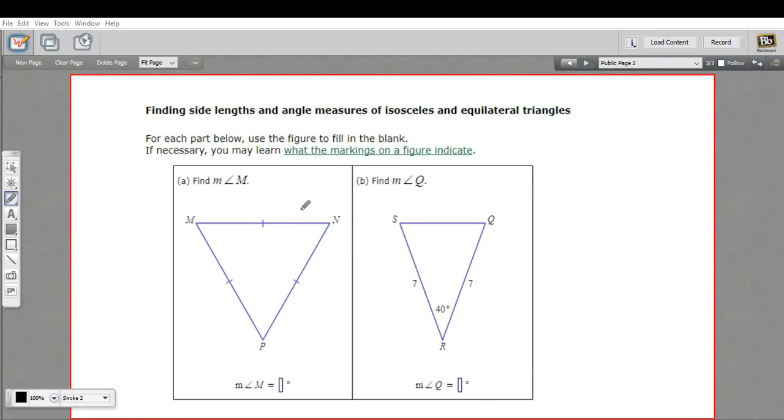In these problems, we are finding side lengths or angle measures in isosceles and equilateral triangles. Remember, an equilateral triangle has all three sides the same length, and an isosceles triangle has two sides the same length.